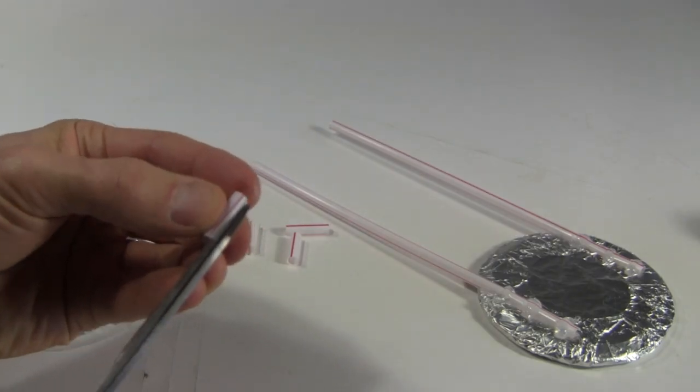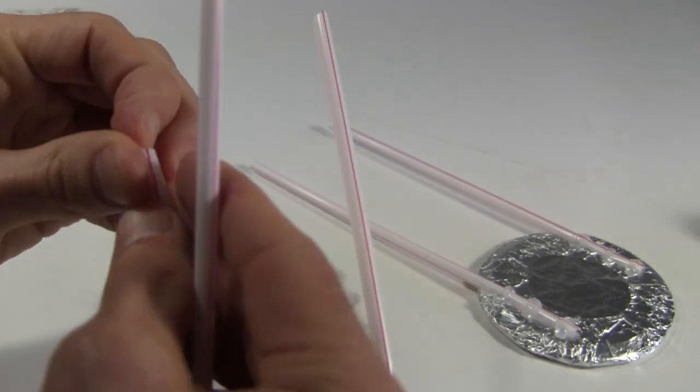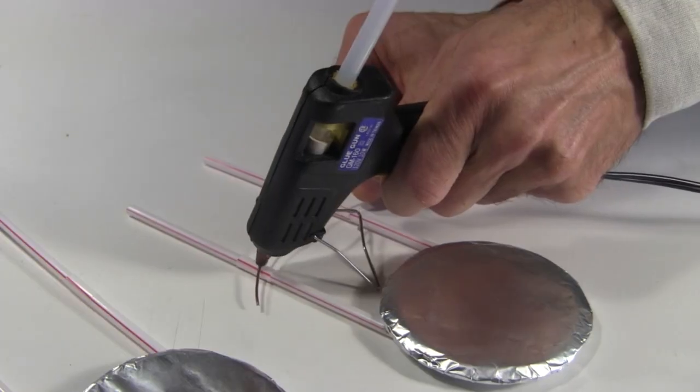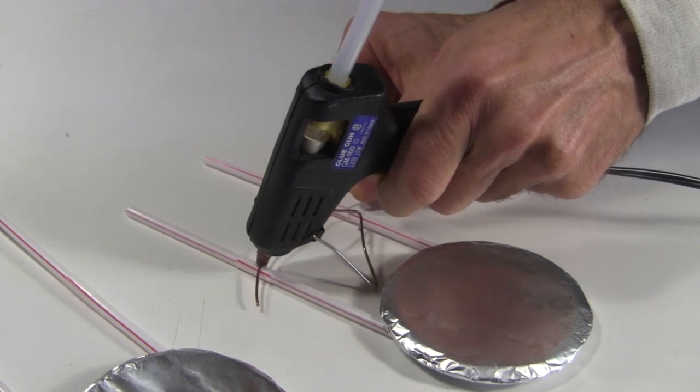I then cut some shorter pieces and slip them lengthwise. That's so that I can slip them over the longer straws attached to the discs. Next I hot glue some thick copper wire to those shorter straw pieces.